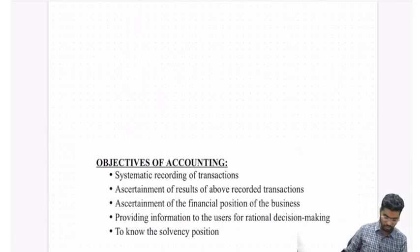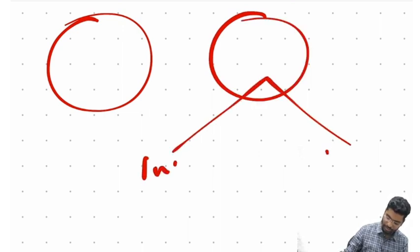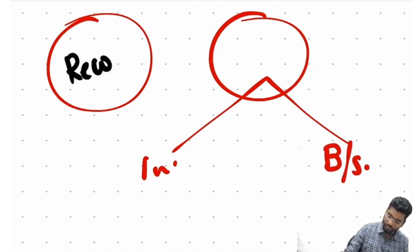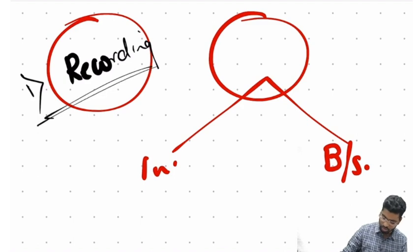Now let's look at why we do accounting. I said I do recording, then I prepare my trial balance, then from trial balance I make my income statement and balance sheet. This recording is my first objective of accounting: the systematic recording of transactions.